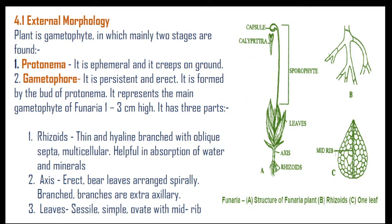Protonema is ephemeral and creeps on the ground, while gametophore is persistent and erect. It is formed by the bud of protonema. It represents the main gametophyte of Funaria, 1 to 3 cm in height. It has three parts: rhizoids, axis, and leaves.